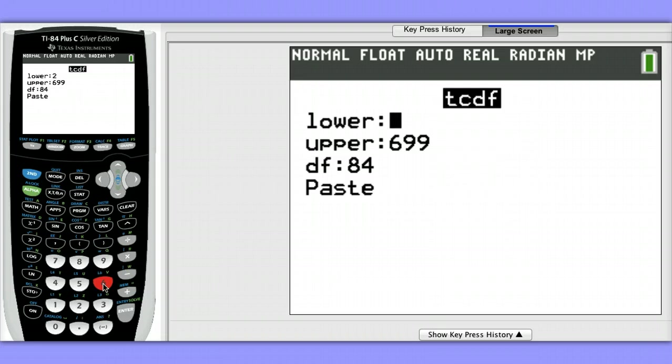So my lower bound is 1.54, and my upper bound, technically the t-distribution continues forever to the right. So the upper bound is technically infinity, but 10,000 should be sufficiently large. And my degrees of freedom is 11.